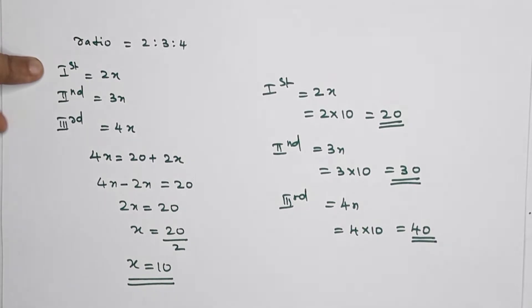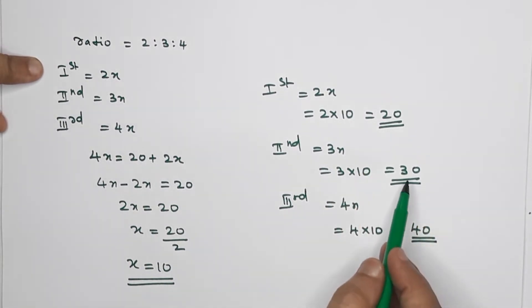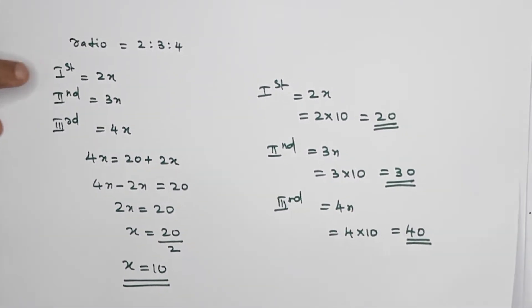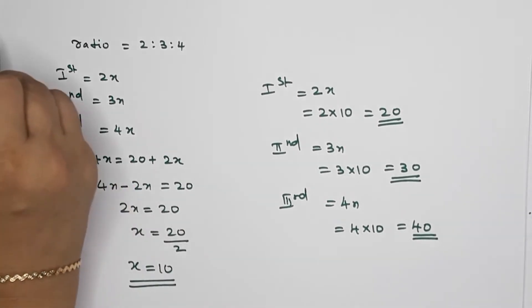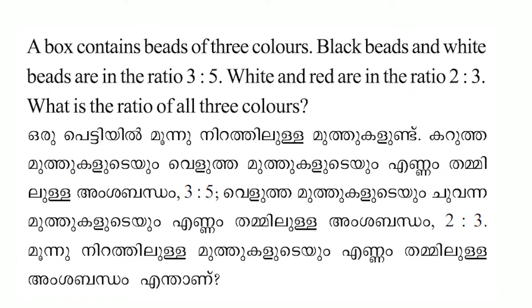Now we have the three sides: the first side is 2x = 2 × 10 = 20 cm, the second side is 3x = 3 × 10 = 30 cm, and the third side is 4x = 4 × 10 = 40 cm. That completes the fifth question.